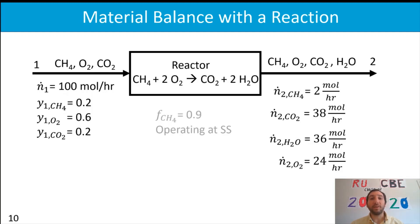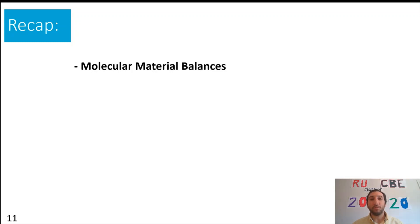Returning to the general process flow diagram, we can now substitute in all known values for stream two — we have all the molar flow rates. We can also calculate the molar compositions. We've been able to figure out all our unknowns using molecular material balances to solve this reaction problem. In part three of lecture five, we'll talk about the other two options — atomic balance and extent of reaction — for solving reaction material balances.